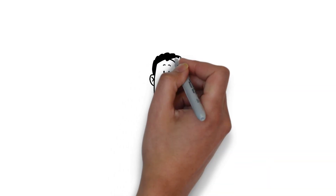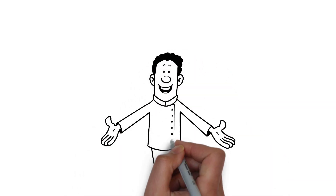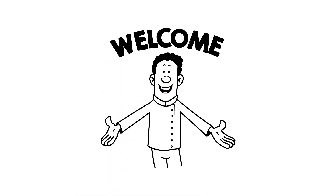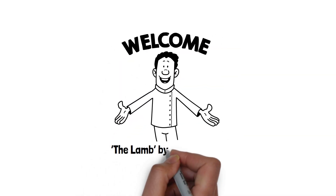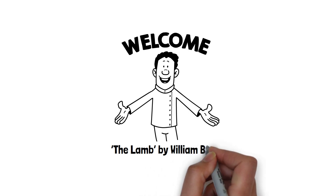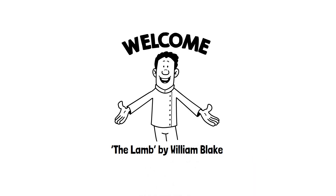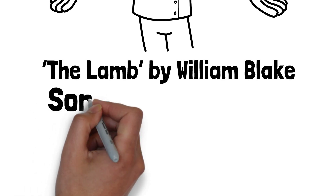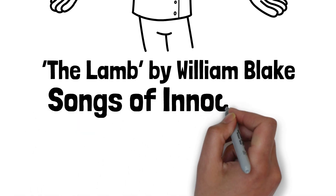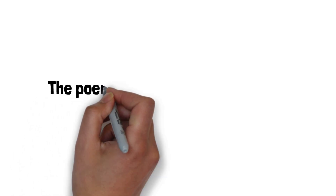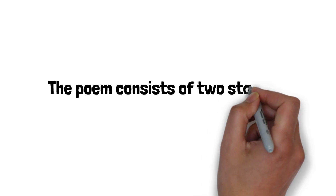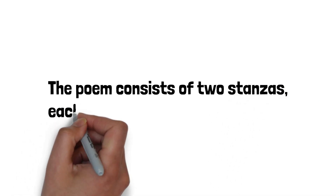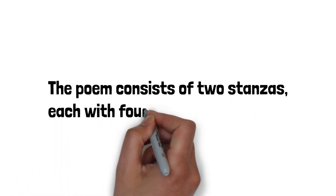Hello everyone. Welcome to Literary Animator, a place where you study, we animate. Today we will discuss a line-by-line explanation of William Blake's poem The Lamb. The Lamb is a poem from William Blake's collection Songs of Innocence. The poem is written in simple language and is meant to be understood by children. The poem consists of two stanzas, each with four lines.